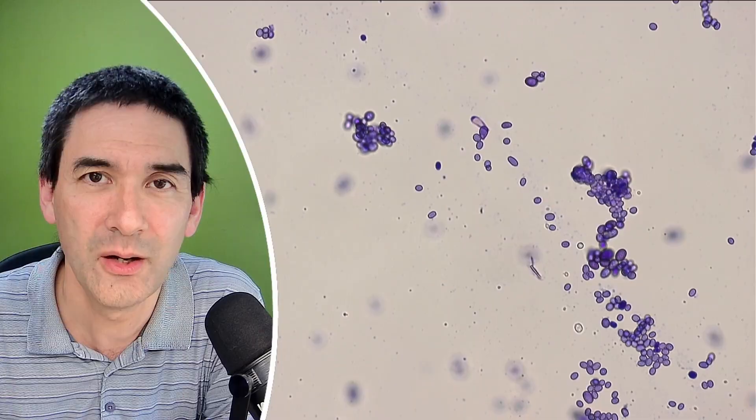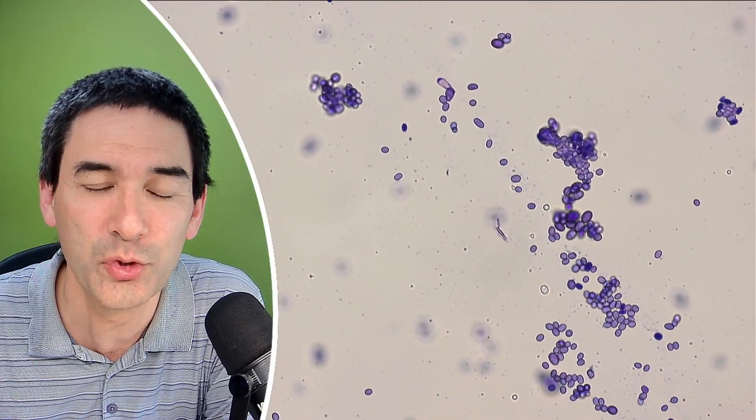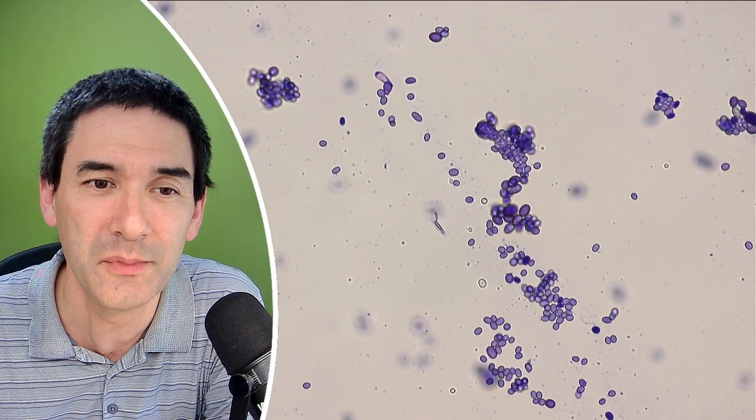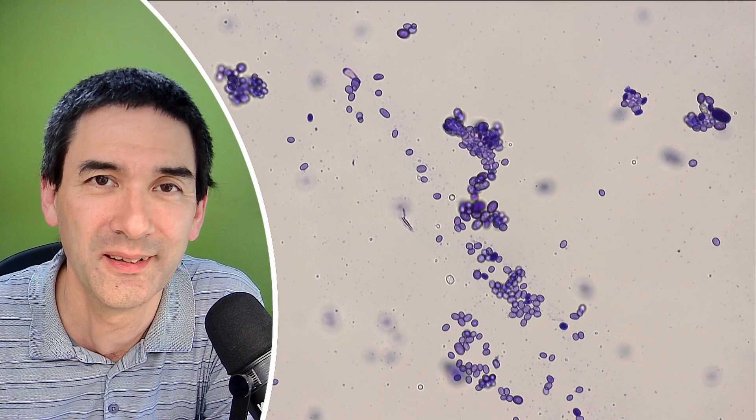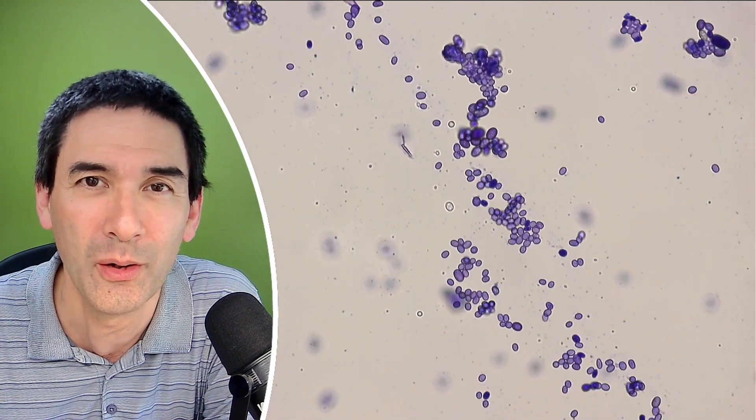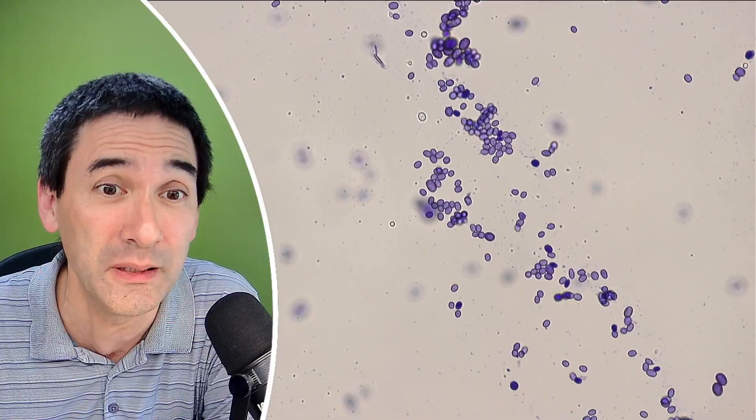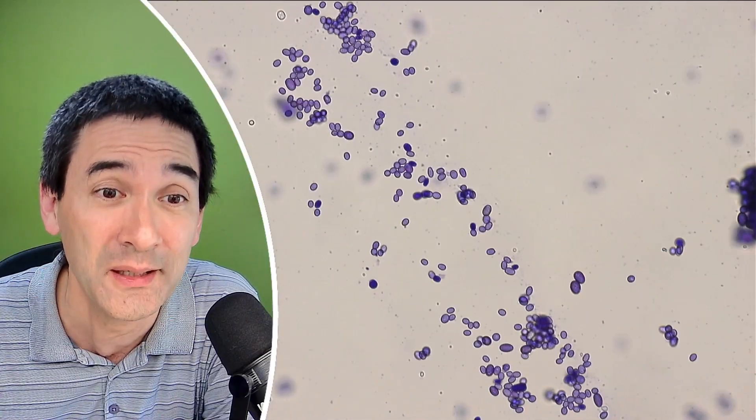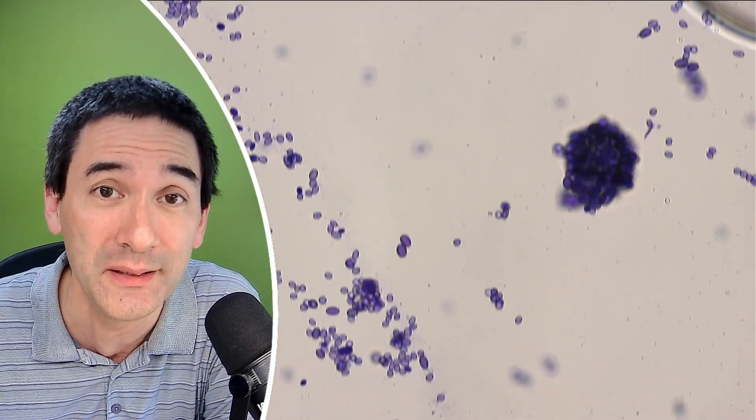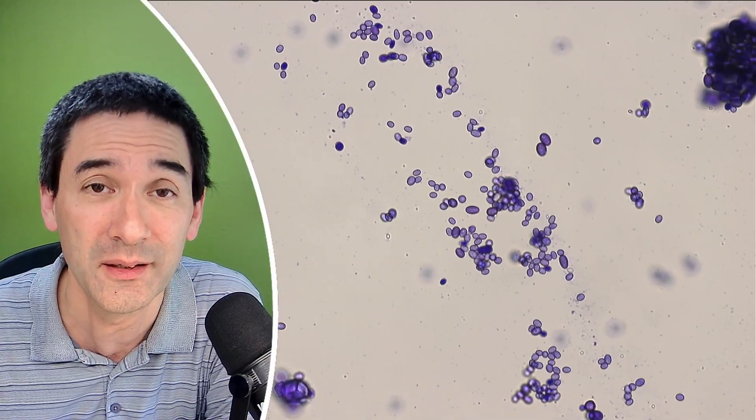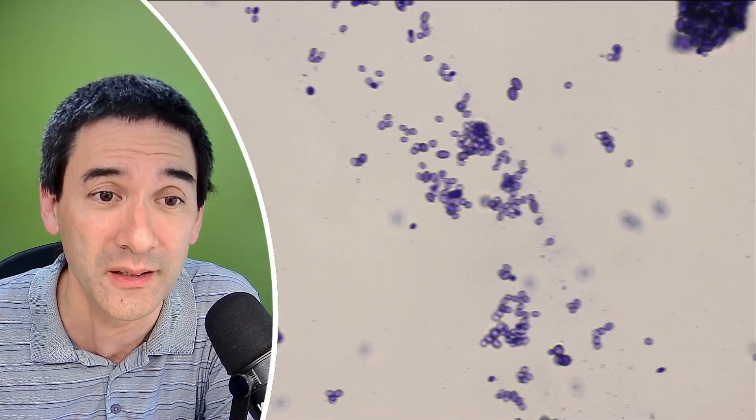So this is now using the 60 times objective and I think it becomes very clear now that the spores are now much better visible to the background. The background is now completely, almost completely white. However, the spores have retained the pigment, the stain and this is basically how it looks like.